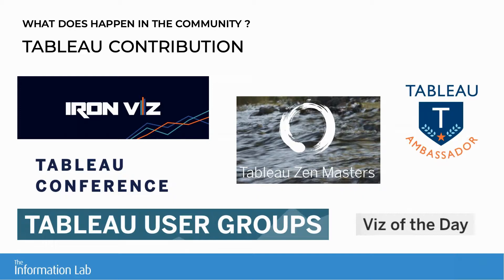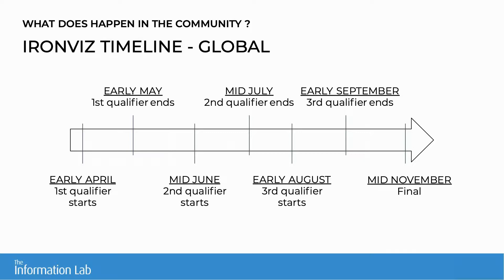Then there is the global Iron Viz, which is a bit different. There are three qualifiers throughout the year, and the first-place finisher of each qualifier goes to the final on stage at the Tableau conference in the US in November. The subjects differ for each qualifier — this year it was agriculture, music, and immigration. For the first and third qualifiers, the data was given, which I think is good because everyone starts from the same basis, and it's purely an exercise in analysis, design, and storytelling.